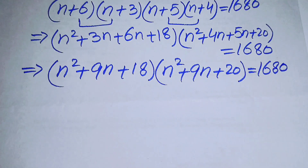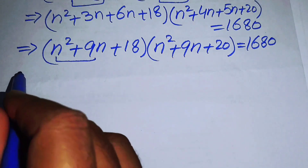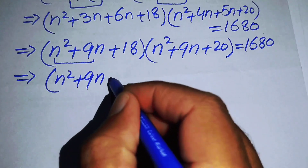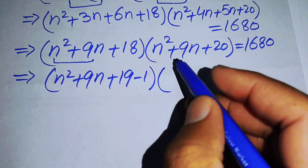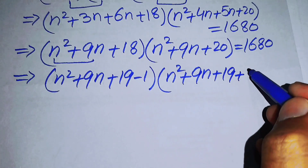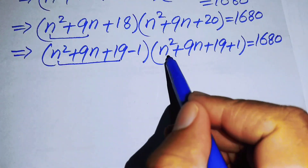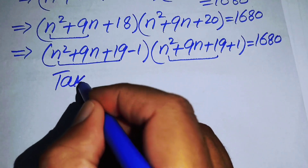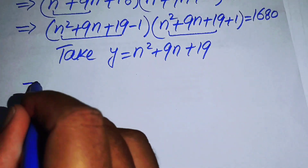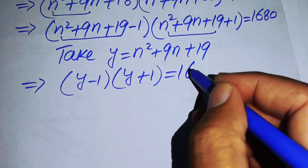We rewrite 18 as 19−1 and 20 as 19+1, so the equation becomes (n²+9n+19−1)(n²+9n+19+1) = 1680. We let y = n²+9n+19, so the equation becomes (y−1)(y+1) = 1680.